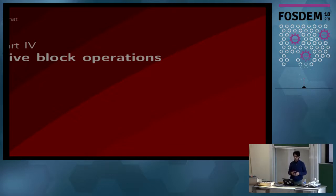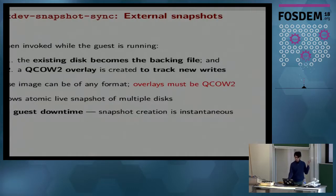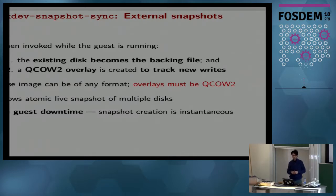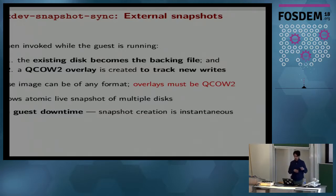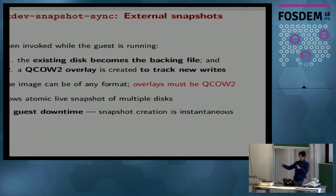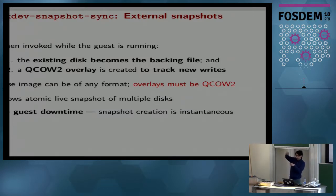Here we see the part I want to talk mostly about — live block operations and their various use cases. First we need to see how to configure a backing chain. QEMU offers the block-dev-snapshot-sync command, which creates a synchronized snapshot. There's also a newer version called block-dev-snapshot. What happens is the same as offline: when a guest is running with a single disk, the existing disk becomes the backing image and a new QCOW2 overlay is created to track new writes from that point onwards. All new writes go to the overlay, and it's all live with QEMU pointing writes to the new overlay.